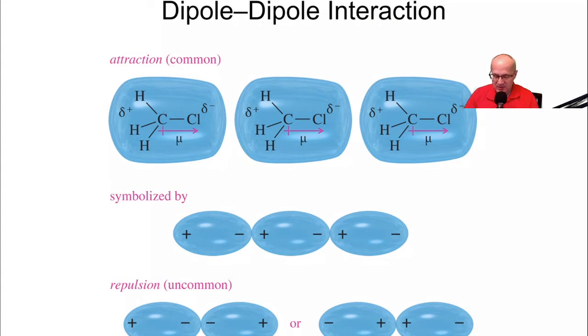And that will be symbolized like this. And this is an attractive force. So most of the molecules in a bottle of methyl chloride will be lined up like this. Because that's attractive. And that's one of the reasons... That's one way molecules can become liquids. They get so close together that they condense to each other.